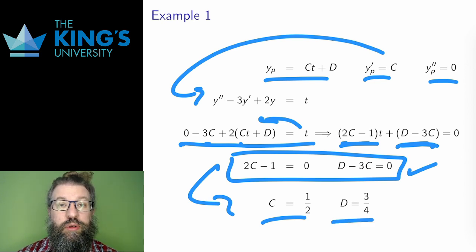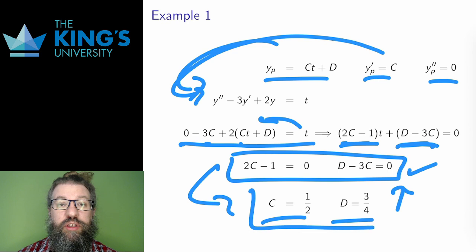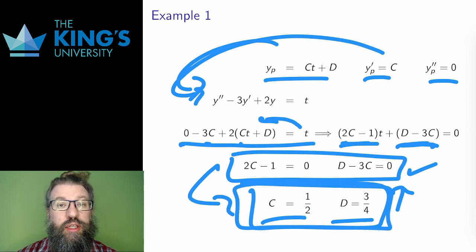This setup will always happen. Putting the guess for yp in the equation and isolating the terms will give a linear system, and that linear system will always have a unique solution. This has essentially reduced a DE, which is hard to solve, to a system of linear equations, which is easy to solve.